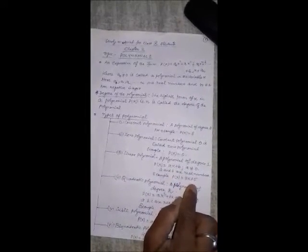Third, linear polynomial. A polynomial of degree 1 is called linear polynomial, which is in the form ax plus b, where a is not equal to 0. A and b are the real numbers. For example, polynomial in x is equal to 3x plus 5 is a linear polynomial.